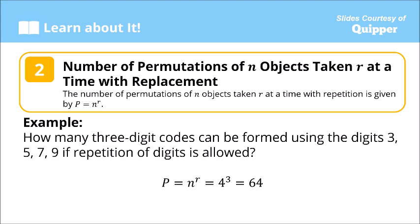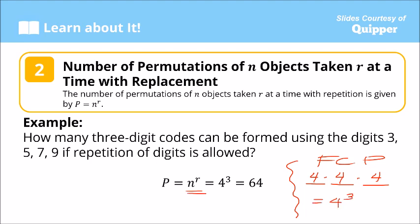Using the fundamental counting principle for three-digit codes, we have three positions to fill. On the first digit we have four options, on the second digit we still have four options because repetition is allowed, and on the third digit another four options. So four times four times four equals four to the power of three, which is 64.